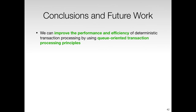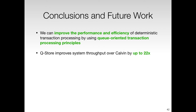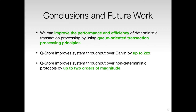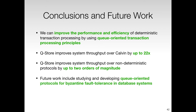In conclusion, it is possible to improve the performance and efficiency of deterministic transaction processing by using Q-oriented transaction processing principles. QStore can achieve up to 22 times the performance of Calvin and can provide up to two orders of magnitude better system throughput over non-deterministic protocols in our experiments. Future work includes studying and designing Q-oriented protocols for Byzantine fault-tolerance database systems.